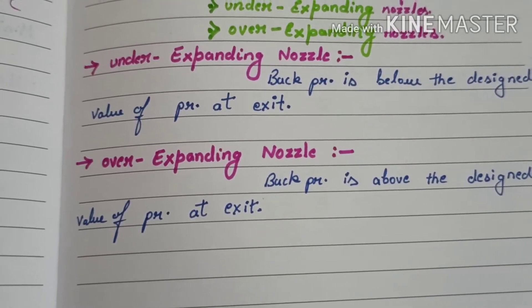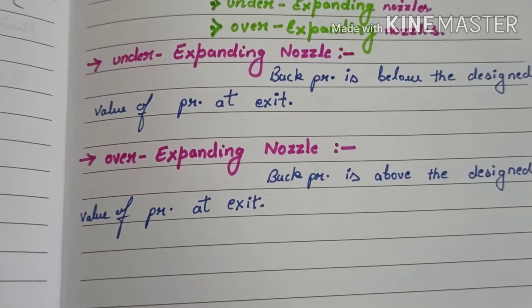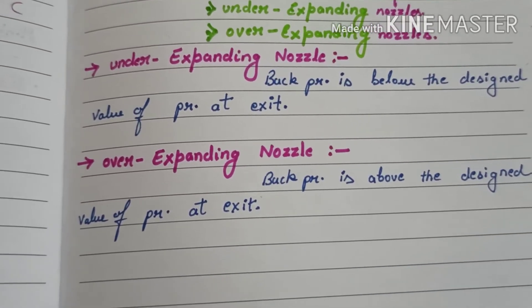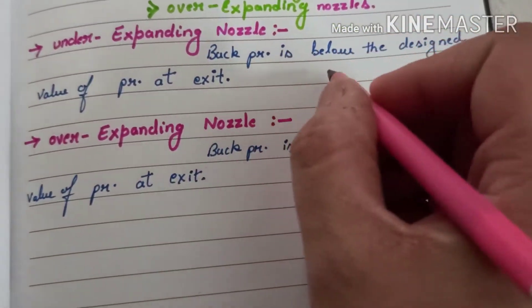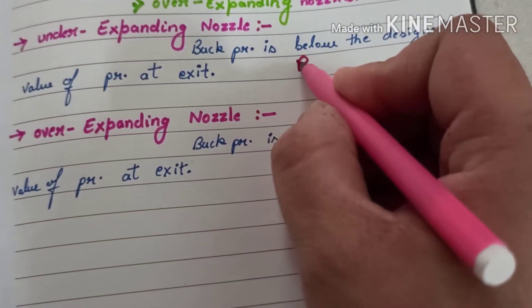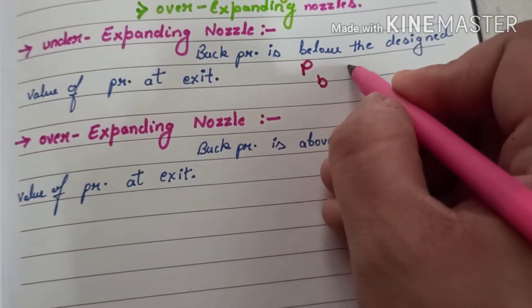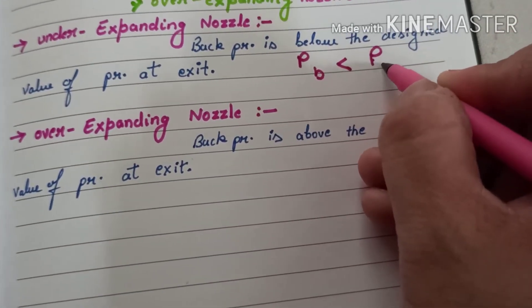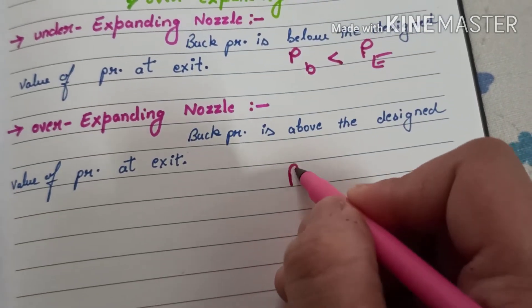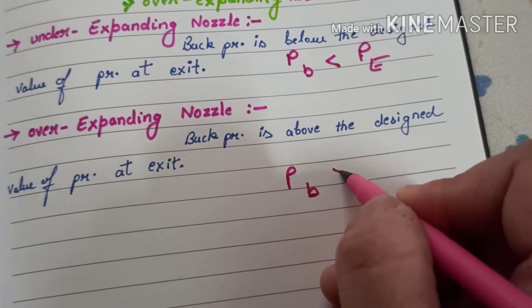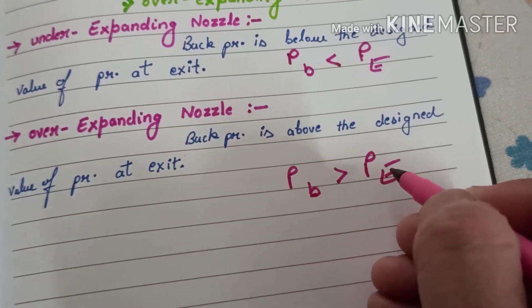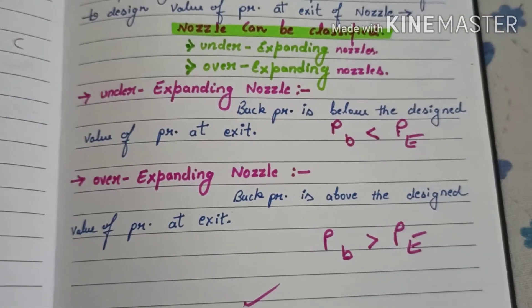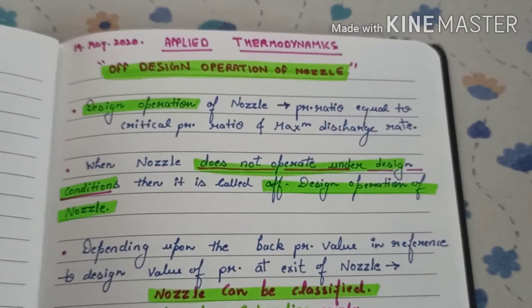When the back pressure is above the designed value of pressure at exit — that means the pressure which we have designed for the exit of the nozzle is less than the back pressure — it will be over-expanding. For under-expanding: back pressure PB is less than the actual design pressure at exit. For over-expanding: back pressure is more than the pressure at exit.